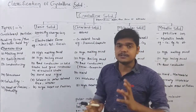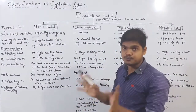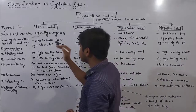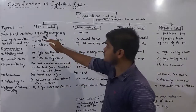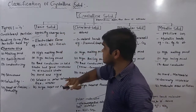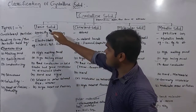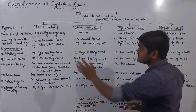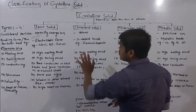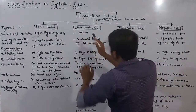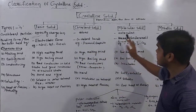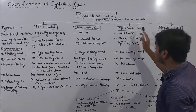The constituent particle of ionic solid contains positive charge ions and negative charge ions. When the constituent particle is an atom, it is a covalent solid. When the constituent particle is molecules, it is molecular solid.